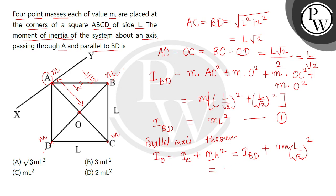Now the value of I_BD is ML square plus from here we get 2 ML square. So the final answer comes to 3 ML square. So the correct answer for moment of inertia is option B. Thank you.